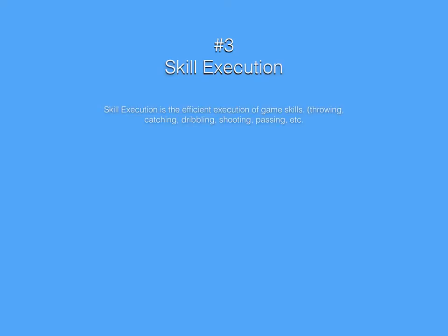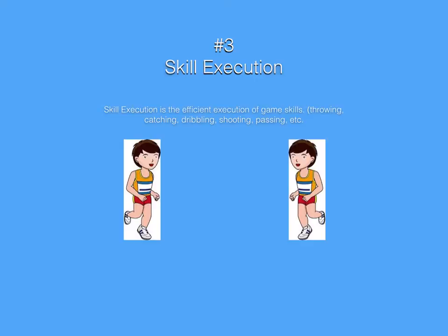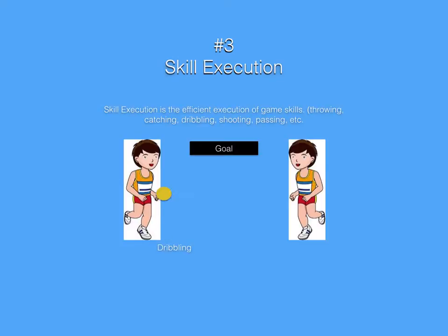Skill execution is our third game component. Skill execution is the efficient execution of game skills: throwing, catching, dribbling, shooting, passing, etc. Notice we have our two volunteers right here — twins — and they're demonstrating throwing and catching. Now he's demonstrating dribbling, shooting, and passing.